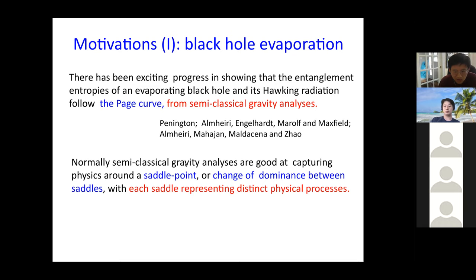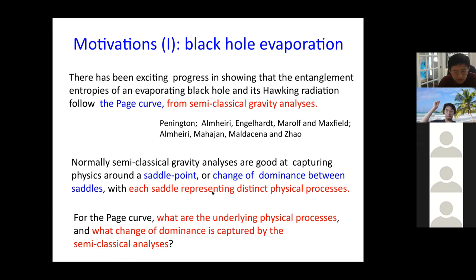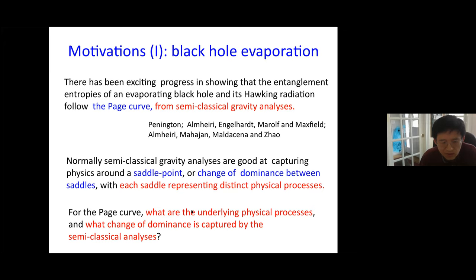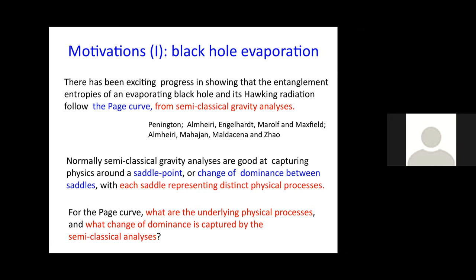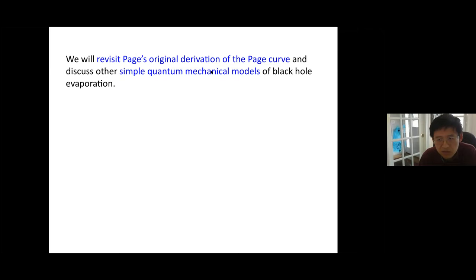Semi-classical gravity analysis is very good at capturing physics around saddle points, or the change of dominance between different saddles, with each saddle representing a distinct physical process. It is natural to ask: for the Page curve, which also has a similar flavor, what does the switch of dominance of quantum extremal surfaces correspond to, and what are the underlying physical processes captured by the semi-classical analysis?